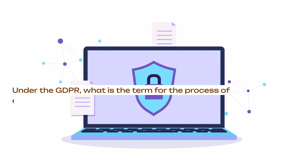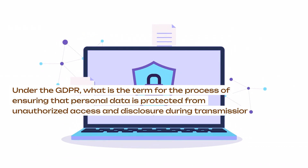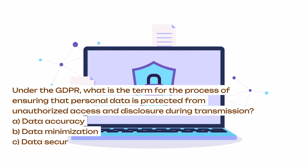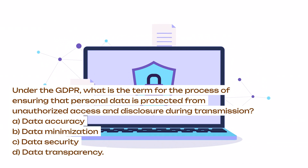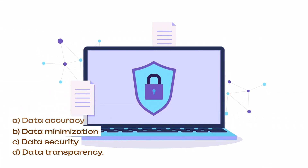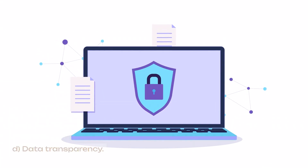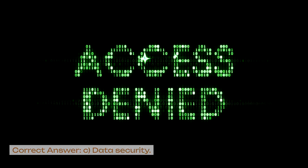Under the GDPR, what is the term for the process of ensuring that personal data is protected from unauthorized access and disclosure during transmission? A. Data accuracy. B. Data minimization. C. Data security. D. Data transparency. Correct answer: C. Data security.